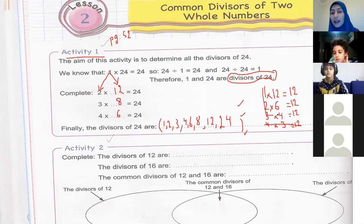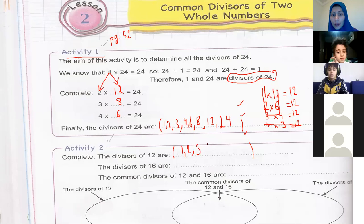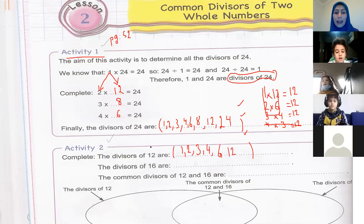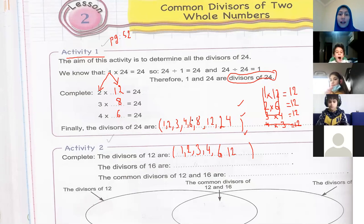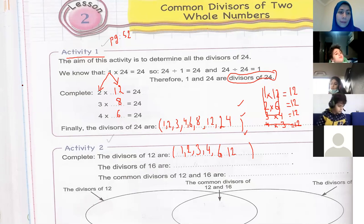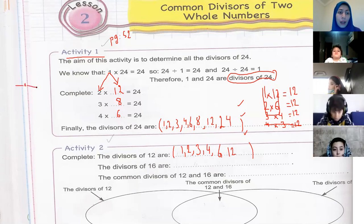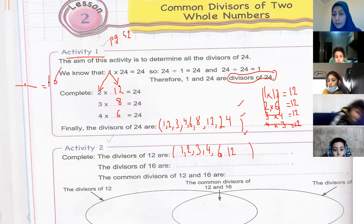What are the divisors of 12? One, two, three, four, six, twelve. We write them in the same shape as before. Now let's find the divisors of 16 — we'll start with which number?